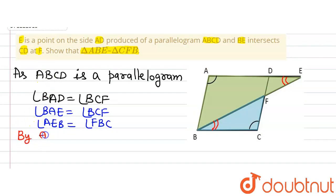by angle angle similarity rule, we can say that both the triangles, that is triangle ABE, triangle ABE is similar to triangle CF.